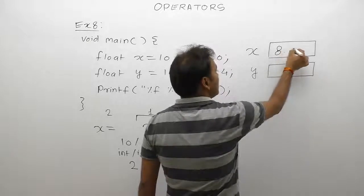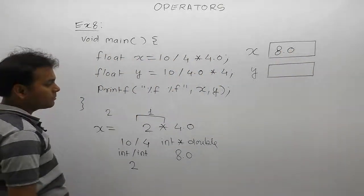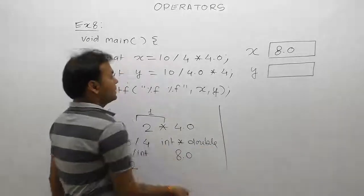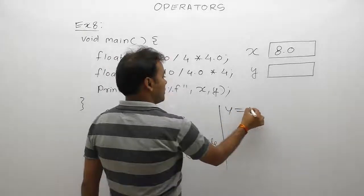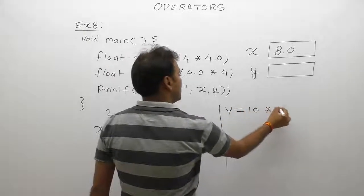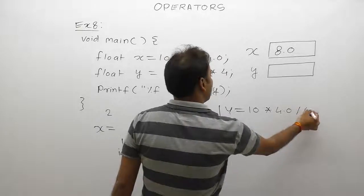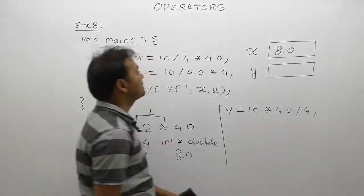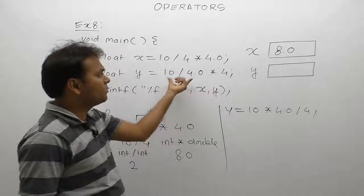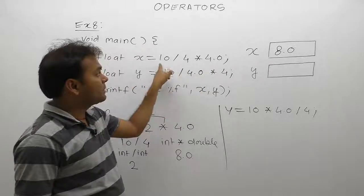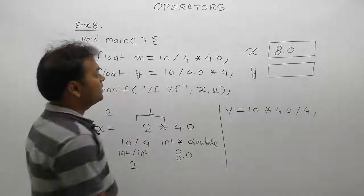Next, similarly we are checking for second expression: y equals 10 multiply by 4.0 divided by 4. In the previous expression there was division then multiplication. Previous case, first both operands were integer, but in this case...